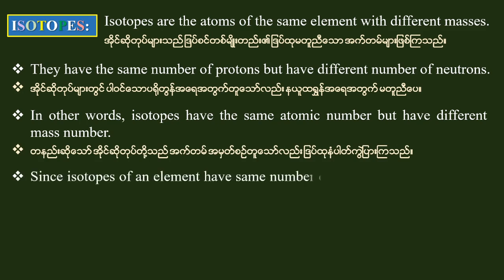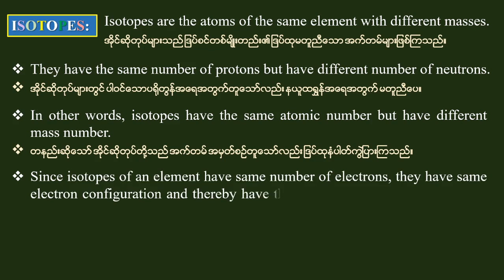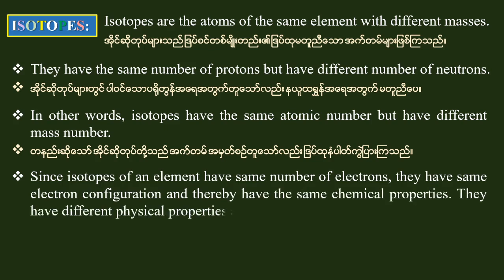Since the isotopes of an element have the same number of electrons, they have the same electron configurations, and thereby have the same chemical properties.